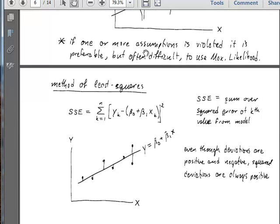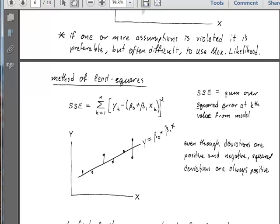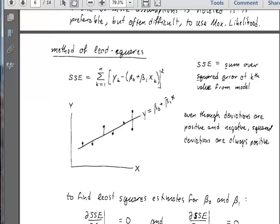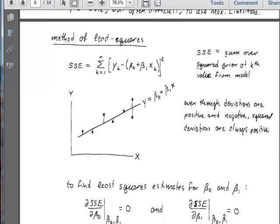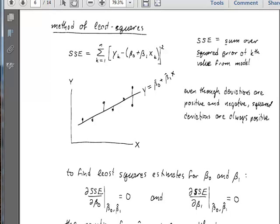I'll just say that if one or more of these assumptions is violated, if we know that they're violated, it is probably preferable to use some more general method like maximum likelihood estimation to come up with a better model for our data. So how does least squares work? Well, I think that in the interest of time, YouTube limits me to 15 minute videos. So we are going to stop right here. And in the next video, we will derive this method of least squares for linear regression.